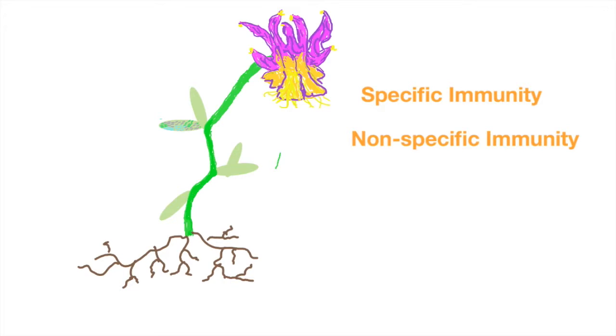It's the idea that with specific immunity, the cell is going to recognize a pathogen and it's going to elicit a response that's specific against that type of pathogen. The opposite is true for non-specific immunity.